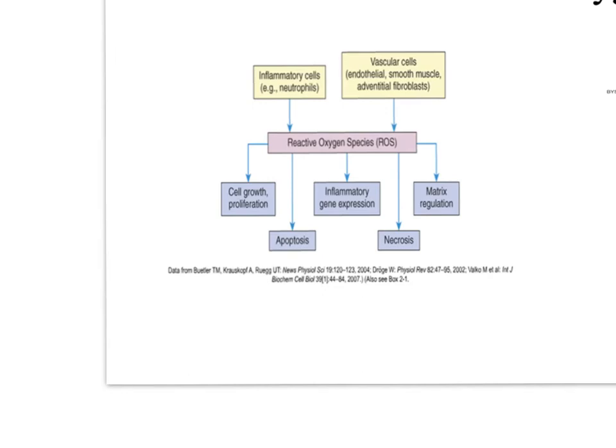Let's talk about reactive oxygen species. Cells generate reactive oxygen forms as byproducts of metabolic reactions that reduce molecular oxygen to water. These reactive forms, called reactive oxygen species, can damage lipids, proteins, and DNA. Cells have antioxidant defenses, but when free radical formation exceeds the cell's neutralizing capacities, free radicals accumulate in the cell and produce a condition called oxidative stress.